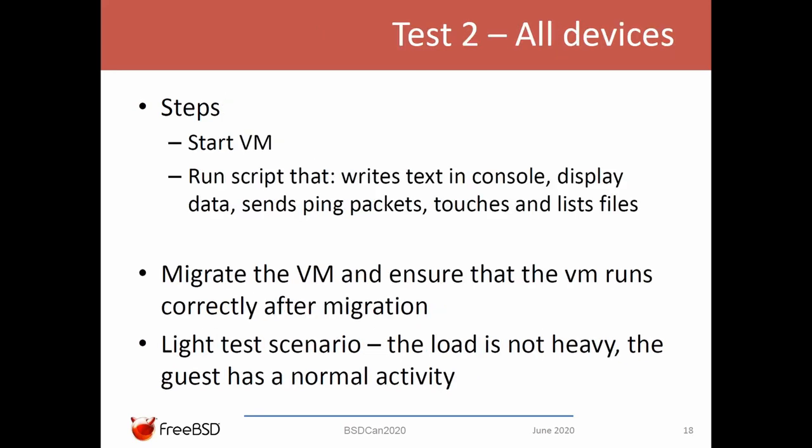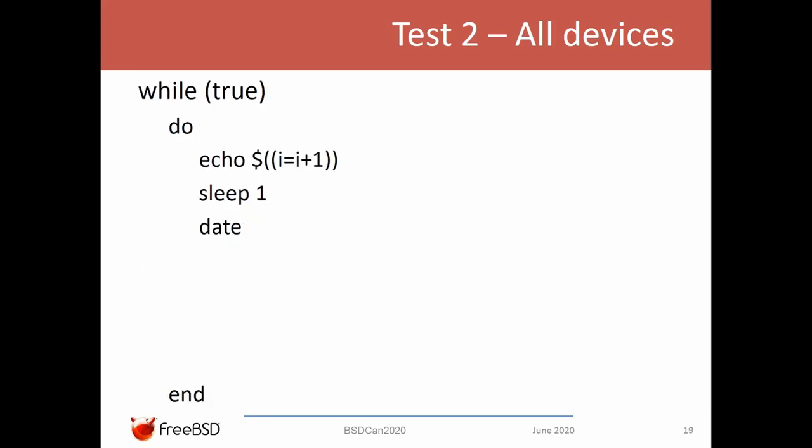The second test is not intensive but tests all components such as network, disk, and timers. We start the VM and run a script — a while-loop that tests timers using sleep and date, the network using pings, and the disk using touch and list. Then, to be sure the operating system does not report any issues, we run dmesg to check for messages.